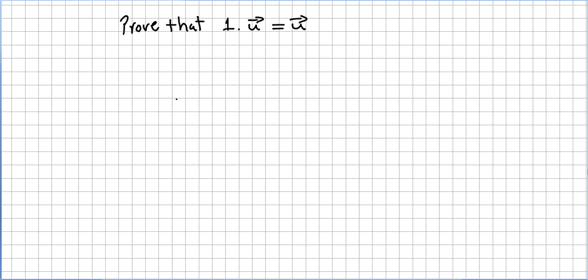This video is on the course of linear algebra and we are on the chapter of vectors and vector spaces. We are asked to prove that the scalar 1 times vector u equals u. It might look a bit funny, this proof, but the fact is that in mathematics sometimes the easiest things are the most difficult to prove.